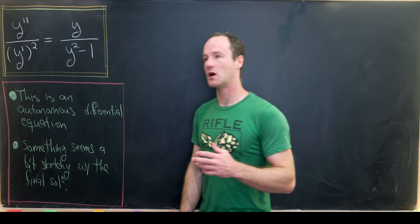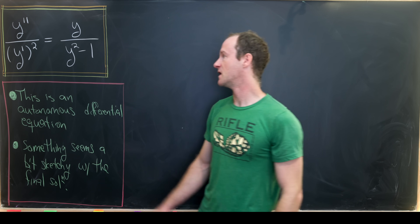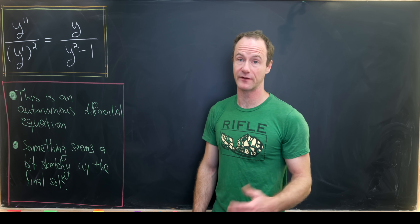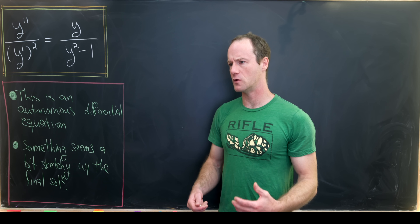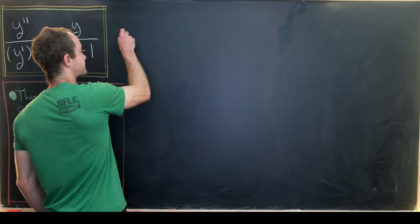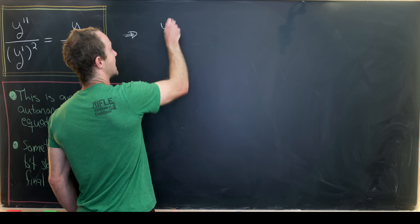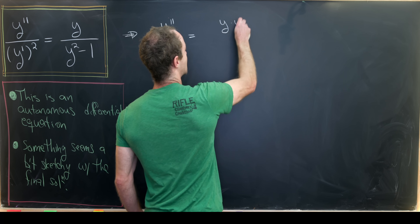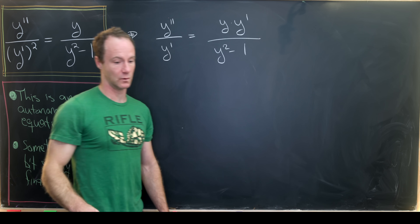Let's get started. I'll first notice that there's a y prime squared in the denominator of the left-hand side. If I multiply that up to the right-hand side, I have a pure differential — a function of y times y prime. So that motivates us to take the antiderivative using something like the chain rule. Making that multiplication gives us y double prime over y prime equals y times y prime over y squared minus 1.